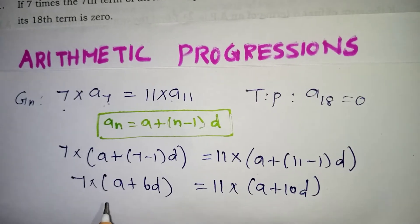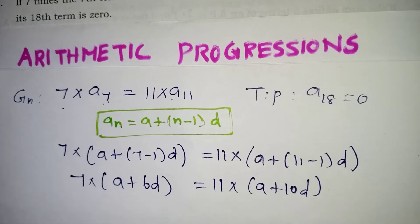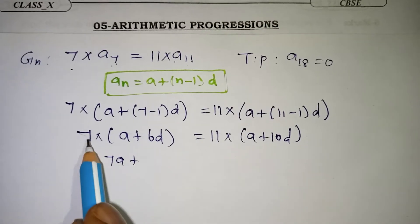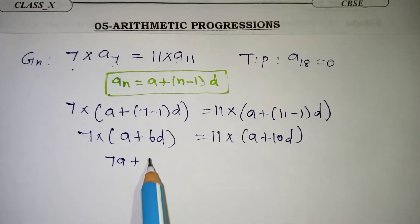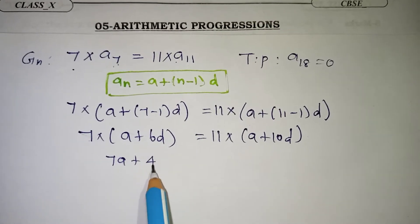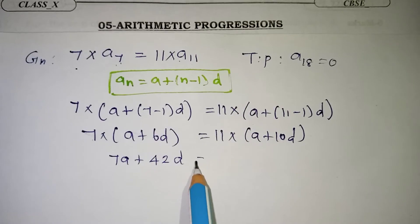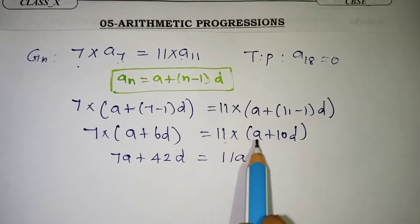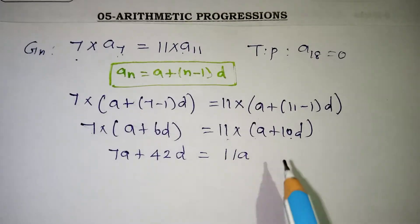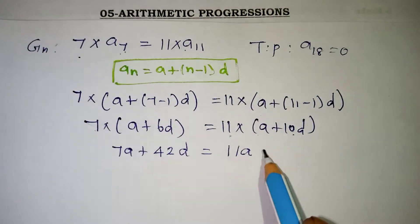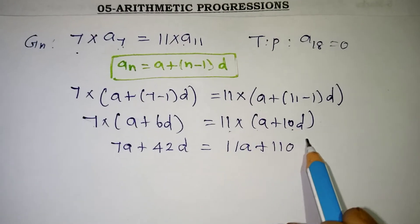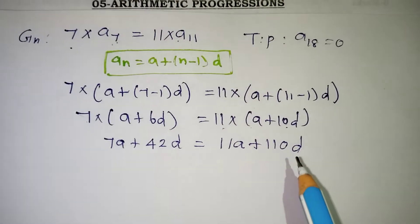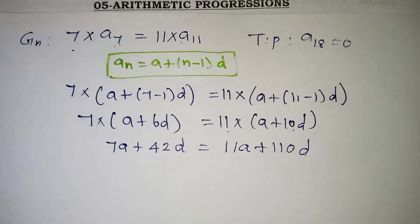Now multiply inside: 7A + 42D = 11A + 110D. Bring all the A terms and D terms together on the same side.